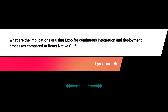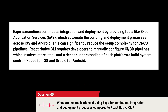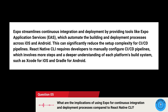What are the implications of using Expo for continuous integration and deployment processes compared to React Native CLI? Expo streamlines CI/CD by providing tools like Expo Application Services (EAS), which automate the building and deployment processes across iOS and Android, significantly reducing the setup complexity for CI/CD pipelines. React Native CLI requires developers to manually configure CI/CD pipelines, involving more steps and a deeper understanding of each platform's build system, such as Xcode for iOS and Gradle for Android.